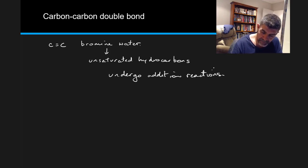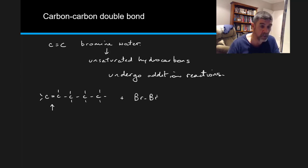Structurally, if we have, say for example, pent-1-ene: 1, 2, 3, 4, 5. There we go. So here's our double bond here, and what we're going to be doing is we're going to add bromine water.